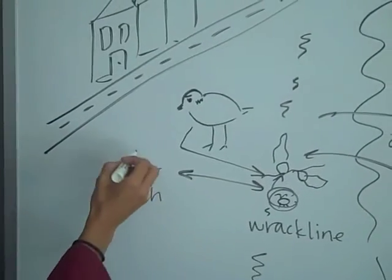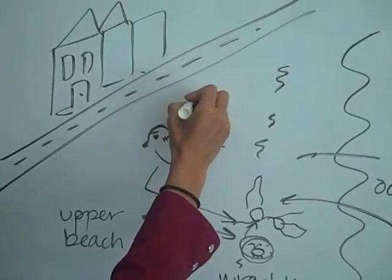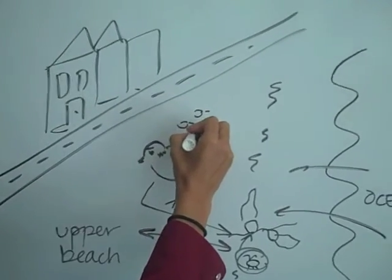And then, for nesting, they need to go to the Upper Beach, so that you would just see them sitting like this on the Upper Beach, nearly invisible.